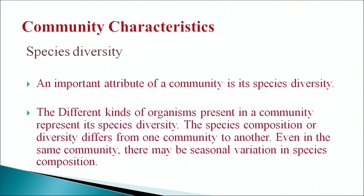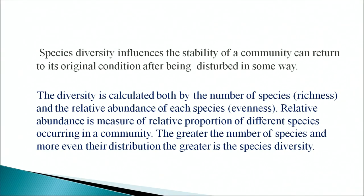Community characteristics: species diversity. An important attribute of a community is its species diversity — the different kinds of organisms present. Species composition or diversity differs from one community to another, and even within the same community there may be seasonal variations. Species diversity influences the stability of a community — its ability to return to its original condition after being disturbed. Diversity is calculated by number of species (richness) and relative abundance of each species (evenness). The greater the number of species and the more even their distribution, the greater the species diversity.